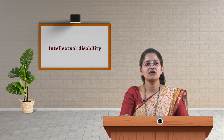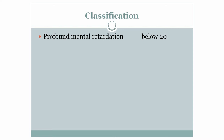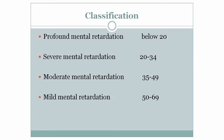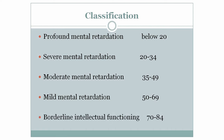Looking at the classification of mental retardation by IQ range: profound mental retardation has an IQ below 20; severe mental retardation has an IQ range of 20 to 34; moderate mental retardation has an IQ range of 35 to 49; mild mental retardation has an IQ range of 50 to 69; and borderline intellectual functioning ranges from 70 to 84.